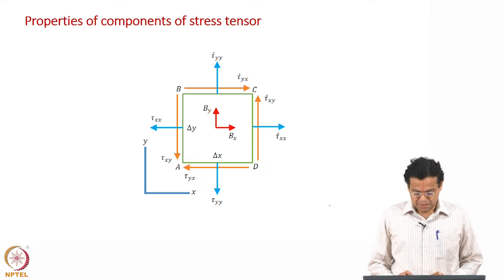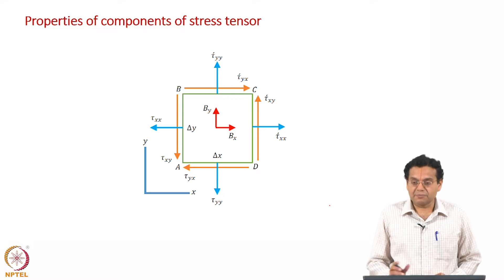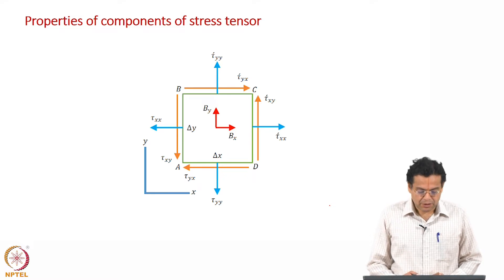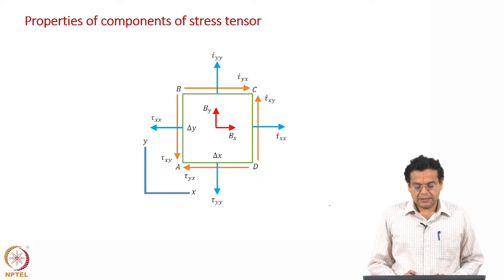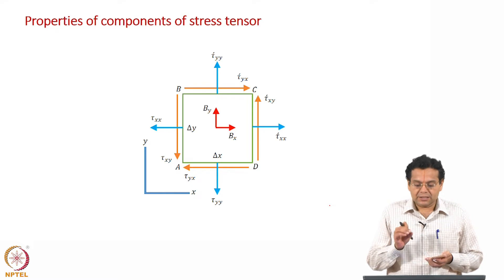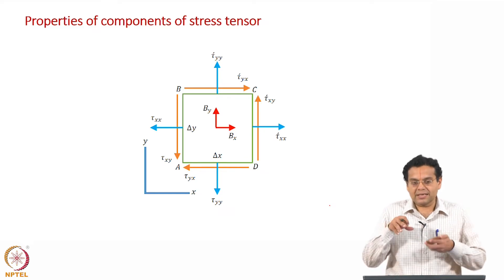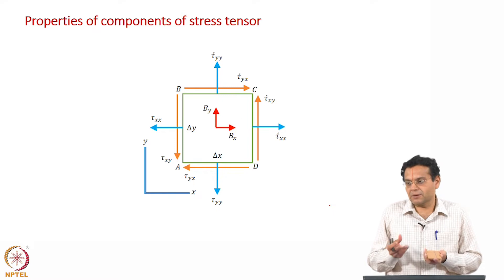What we will discuss now are the properties of the components of the stress tensor and how that helps us in terms of simplification. What is shown here is a two-dimensional plane element. You can imagine it as a plate, but the correct way is to imagine it as a small two-dimensional region inside a solid object, just as we considered a tetrahedron inside a solid object.